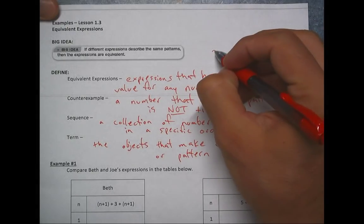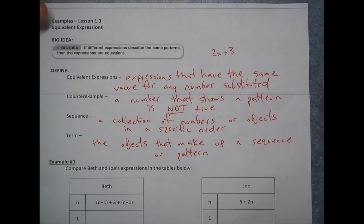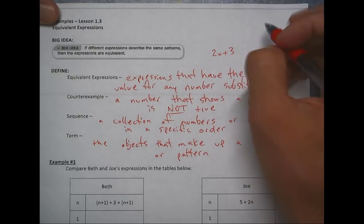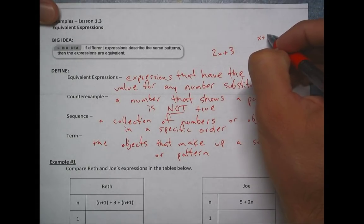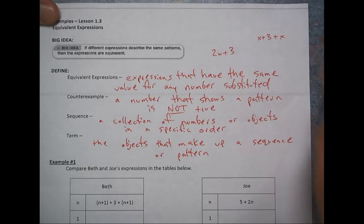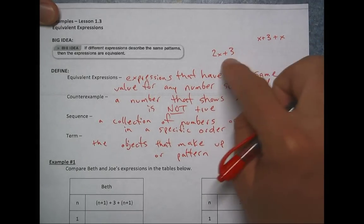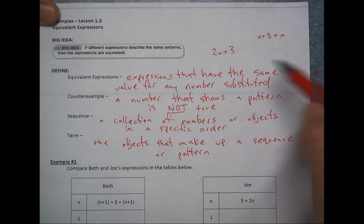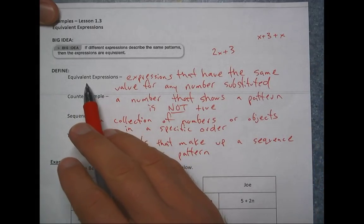So again, an expression is anything like 2x plus 3. That's an expression, no equal sign that would make it an equation. So if I had another expression, like let's just say it was x plus 3 plus x, and I wanted to say are these equivalent? One way to talk about it is do they simplify to the same thing? The other way is like the definition to substitute a number in for x and see if you get the same value. If you do, then those would be equivalent expressions, kind of like equal expressions.